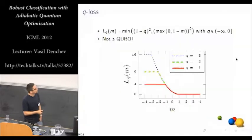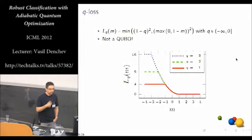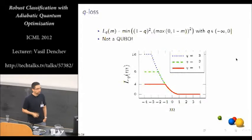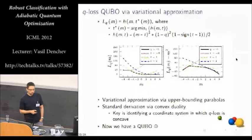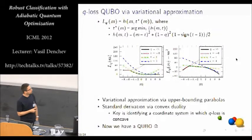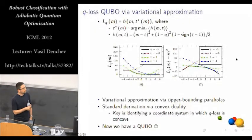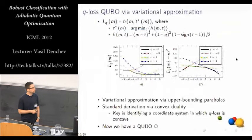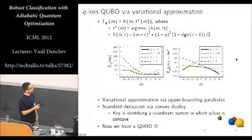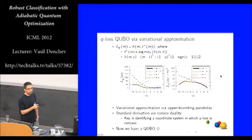And that hyperparameter would be cross-validated in actual training problems. So the initial formulation of q loss looks like this. But this is not immediately a QUBO form. So we can't put it on the quantum hardware. So we need to do something additional in order to make it compatible with quantum optimization. We achieve this via variational approximation. So we notice that the q loss can be upper bounded by a family of parabolas. So the goal of the variational approximation is to express the loss in terms of these upper bounding parabolas.